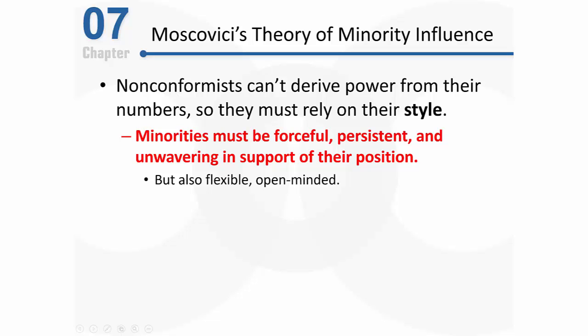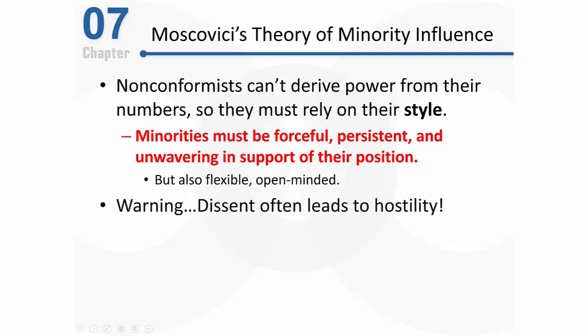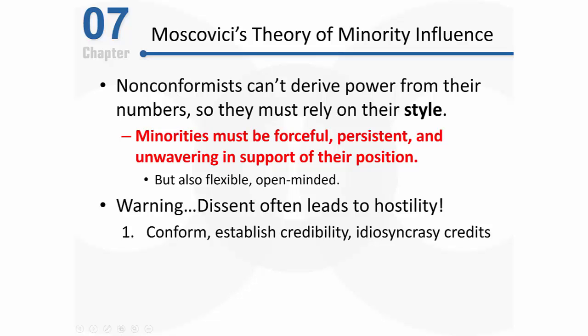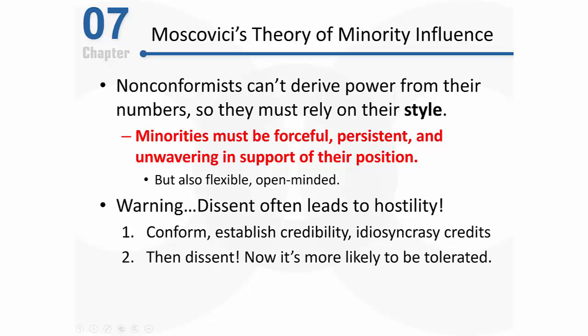Dissent often leads to hostility within a group, which is why Edwin Hollander suggested a two-step alternative approach: first conform to the group and then dissent. Hollander's approach suggests that minority members will be most influential if they first conform, establish credibility, and accumulate what he calls idiosyncrasy credits — essentially brownie points. Once the dissenter has established credibility and goodwill with the group, the group will tolerate some deviance, and that's when it's time to dissent.